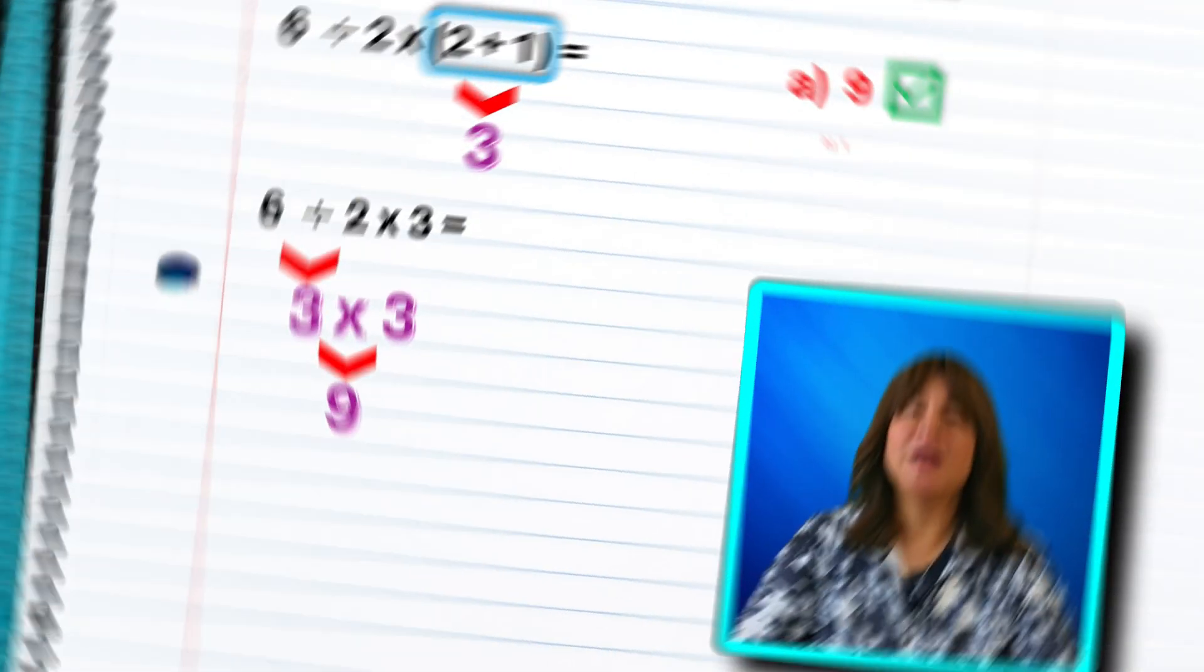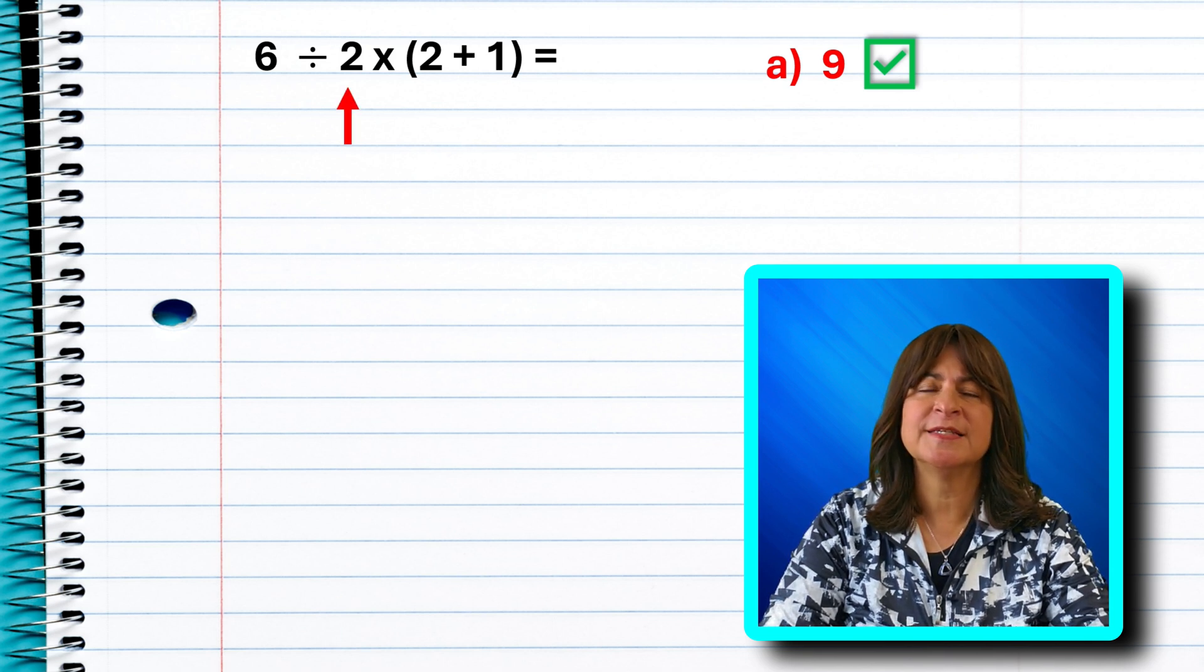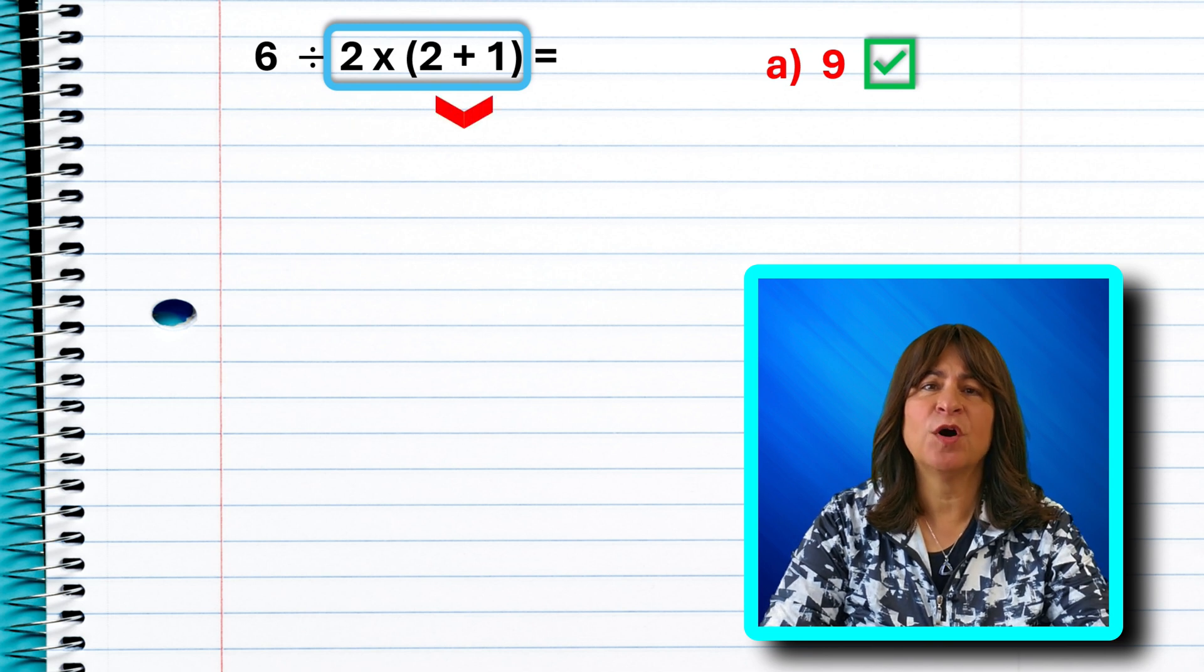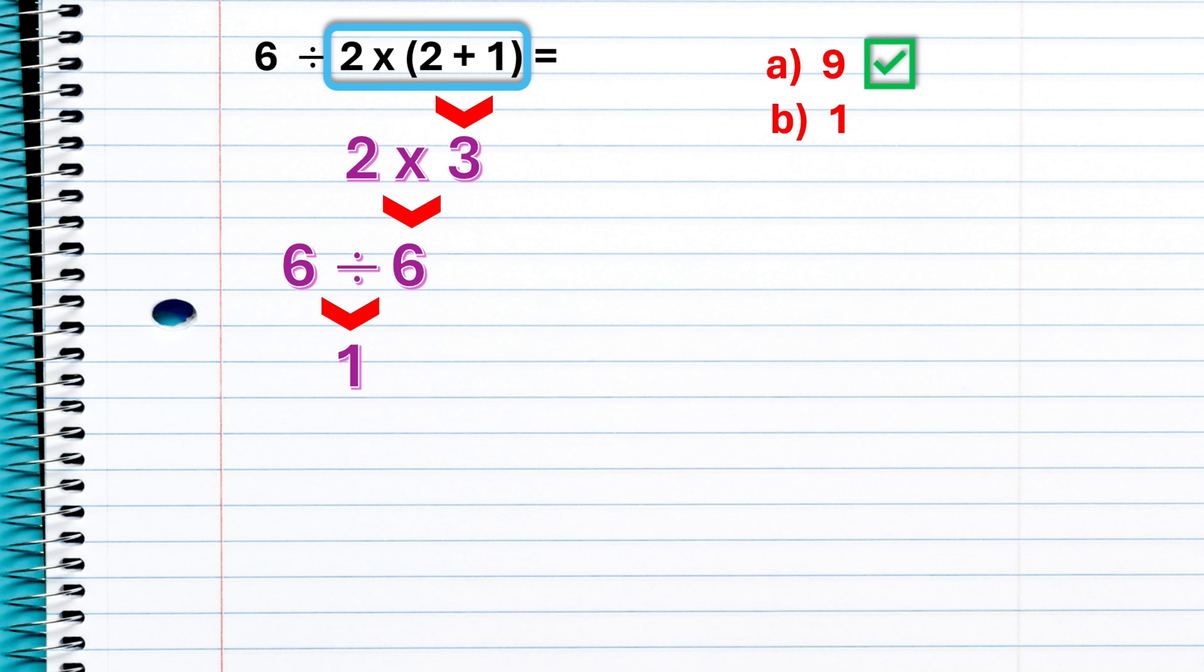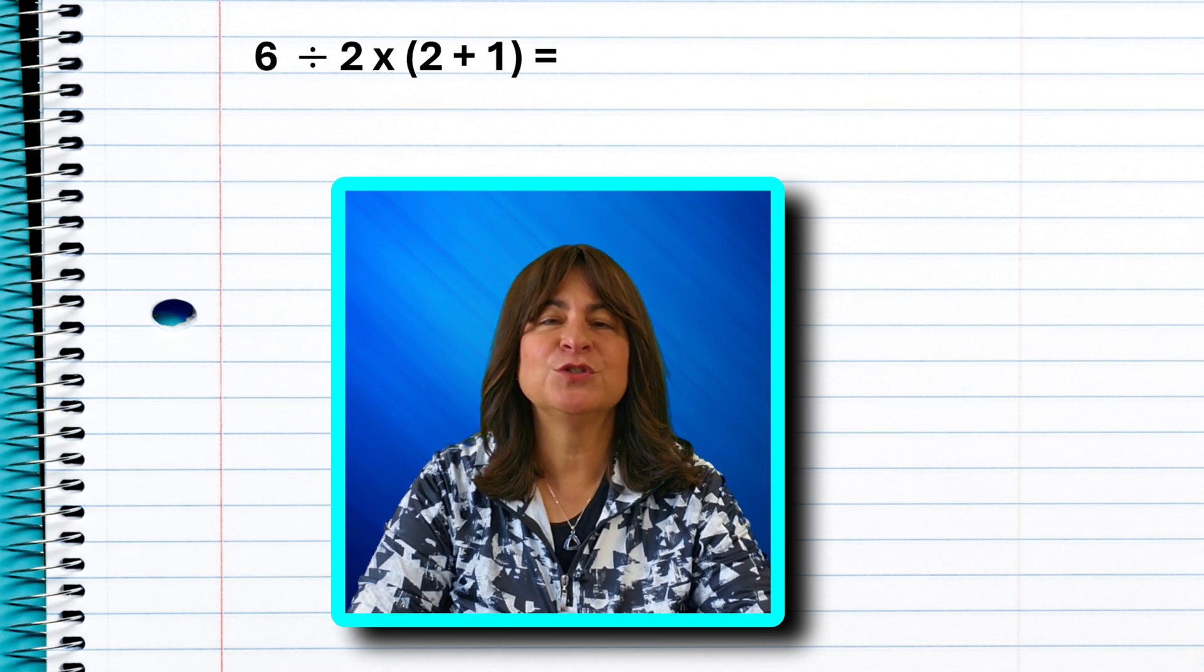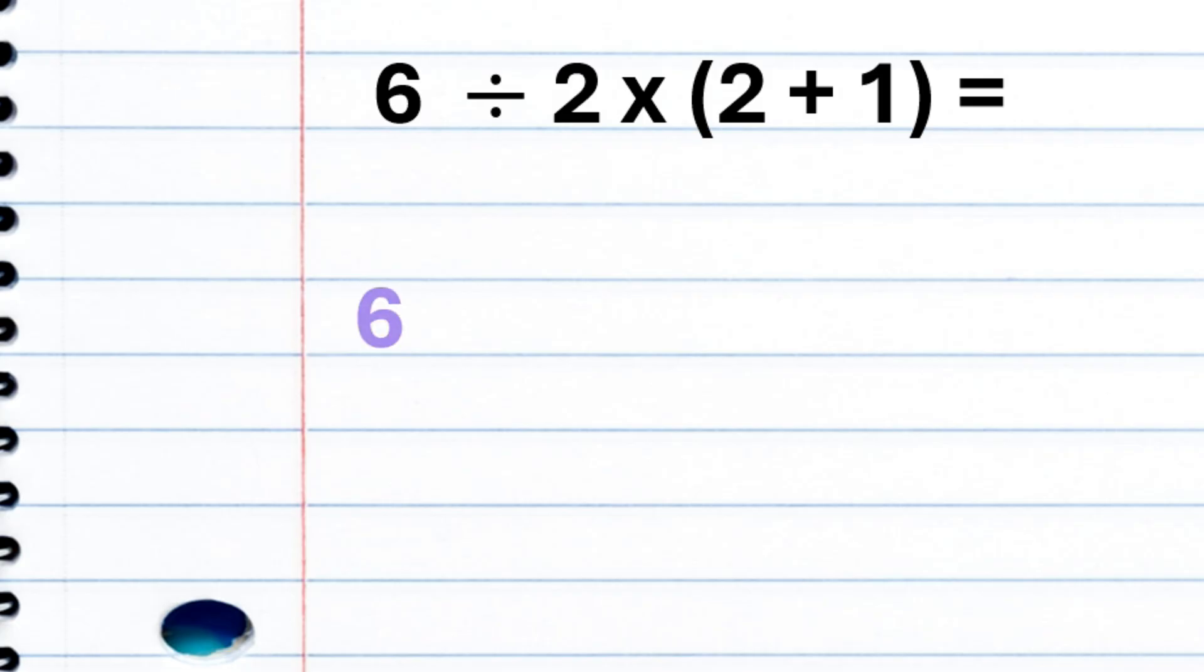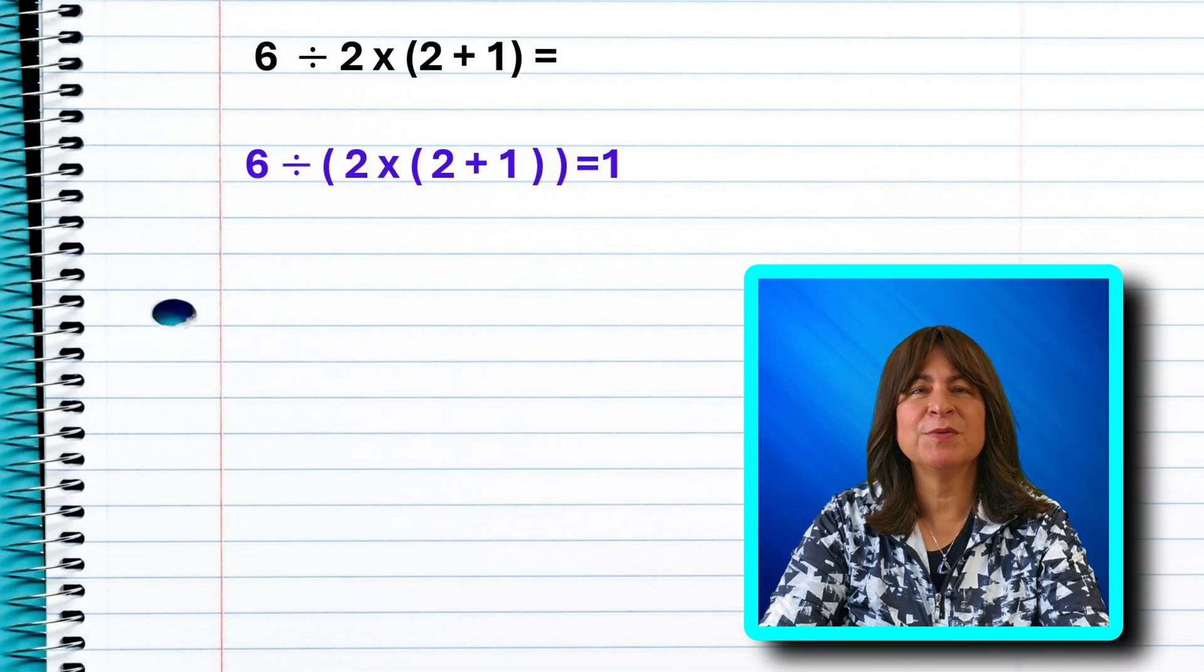Why do some people get 1 as the answer? Well, if you use implicit parentheses, that is, you assume that the 2 that is in front of the 2 plus 1 that's in parentheses is attached to that, then you would add 2 plus 1 and get 3. And then you would multiply that by the 2 attached to it. So you get 6. And then 6 divided by 6 is 1. That is not the way we conventionally use math today, at least not in the United States. If you want to attach the 2 to the 2 plus 1 in parentheses, then you should include another set of parentheses to read like this. 6 divided by, and then you would have another set of parentheses. So open, 2 times open, 2 plus 1, close, close. If the problem was written this way, then clearly the answer is 1. Why do some people think there is a set of implicit parentheses there?